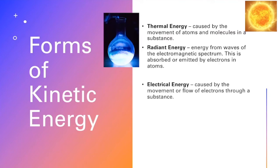And then the next type of kinetic energy is electrical energy, caused by the movement or the flow of electrons through a substance. My example here is lightning. However, the electricity that is flowing through the wires in your house is also an example of electrical energy. But this is also an example of radiant energy because it's giving off light, and lightning is hot so it's also thermal energy.